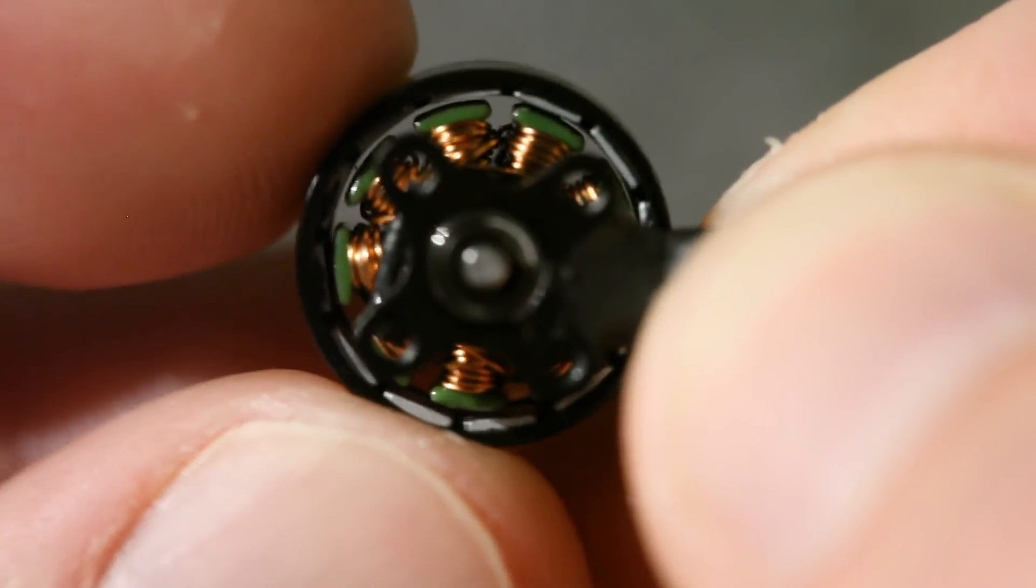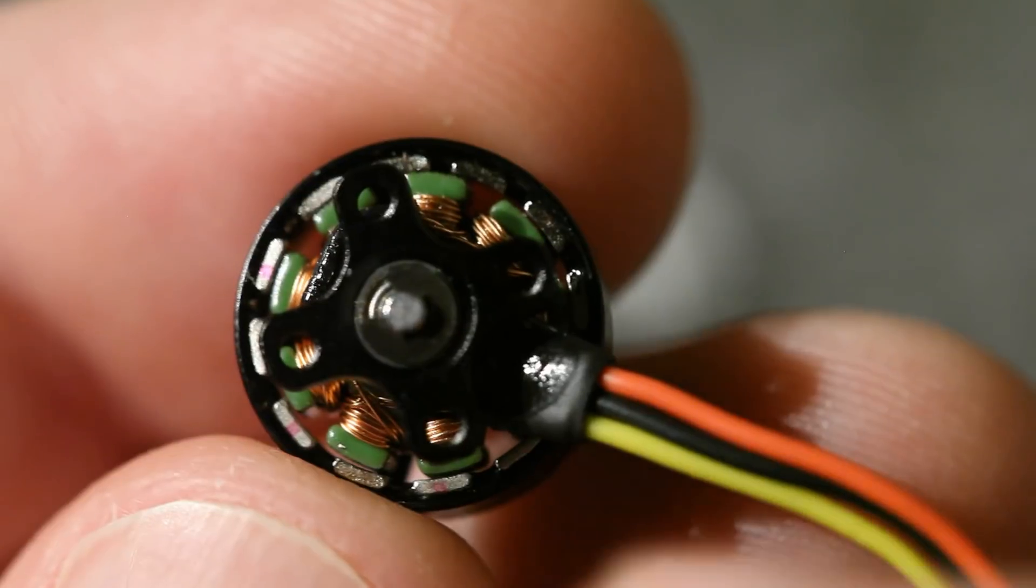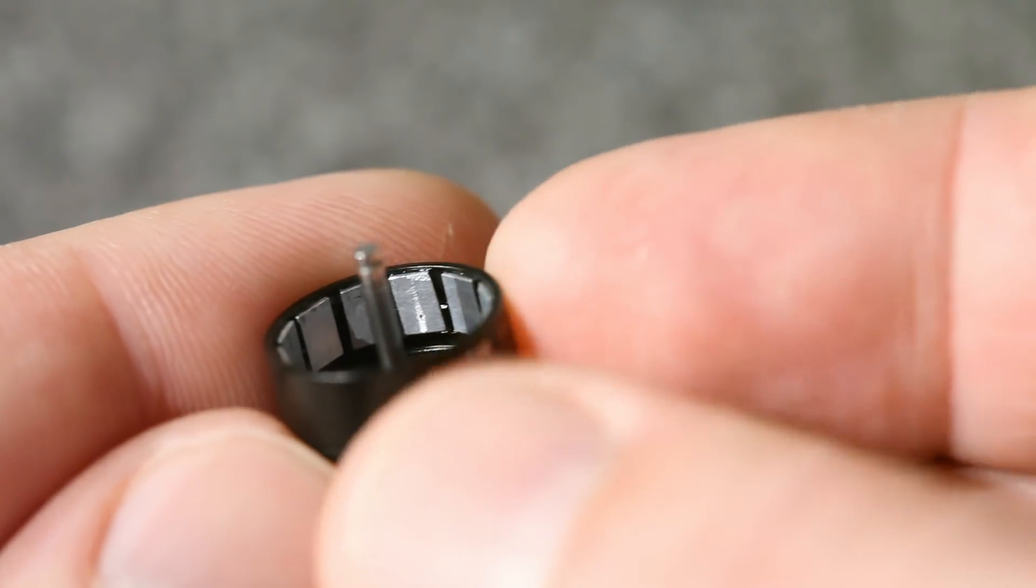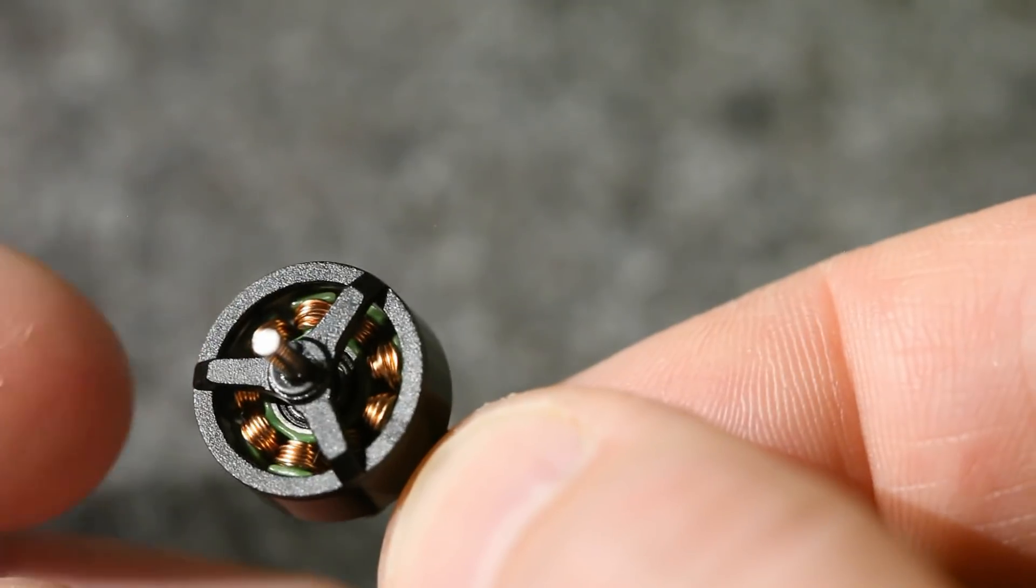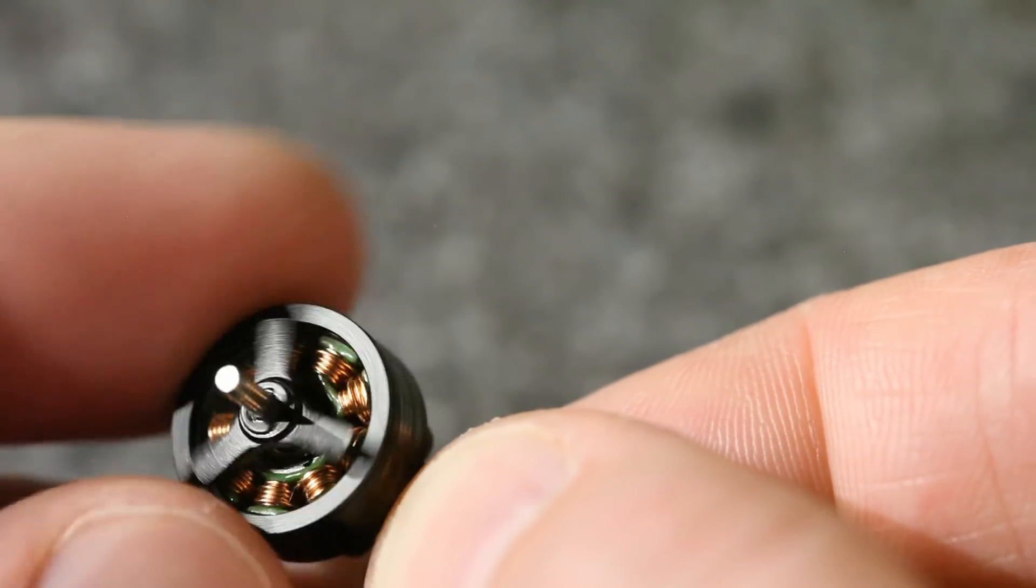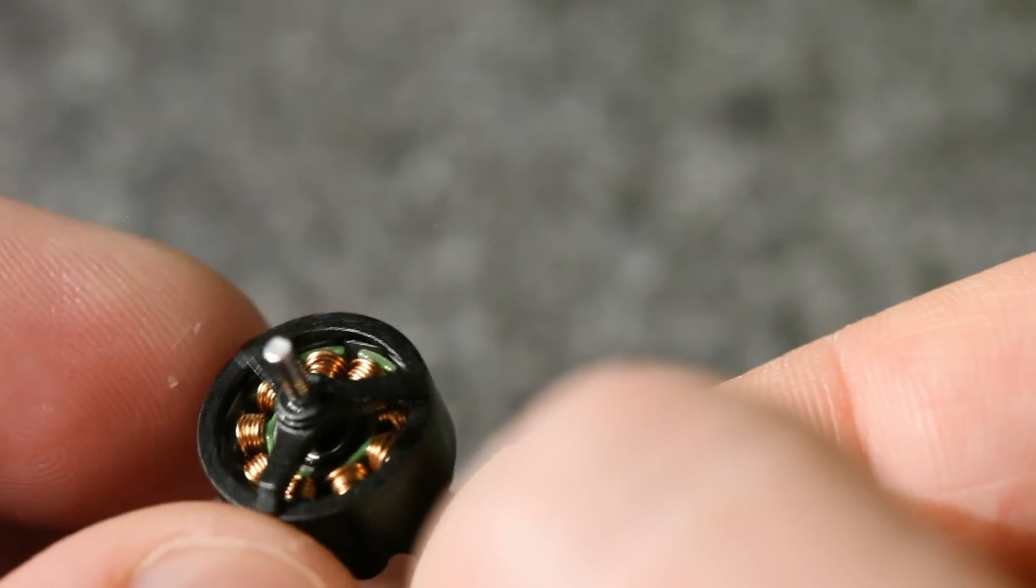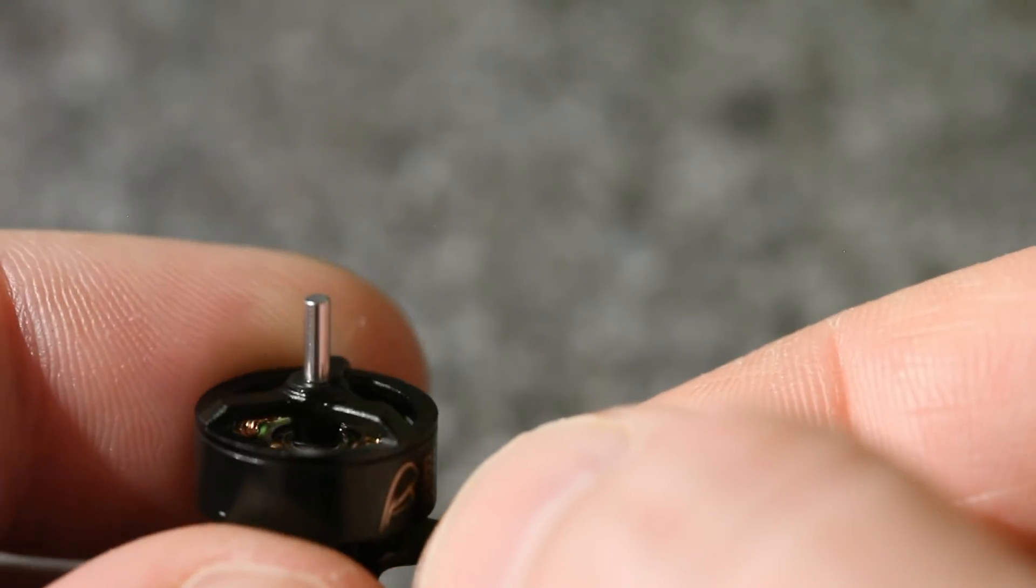If I hold it really close, then you might be able to see the gap between the stators and the magnets. If you compare that to the 11,000 kV motor, you can see that this one definitely had smaller gaps. And here's the inside of the bell if you wanted to get a better look at those magnets. One thing that I noticed right away is that when you spin the bell, it feels super smooth. It's not very notchy at all. In fact, it might be the least notchy brushless motor that I've ever seen.